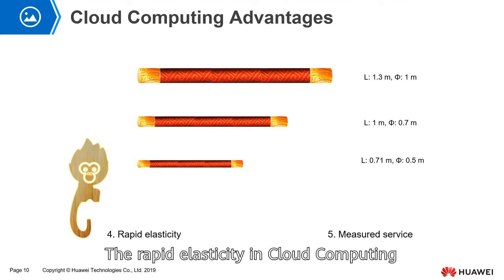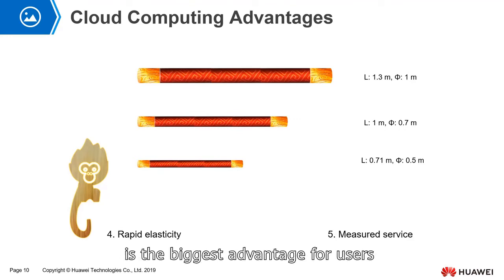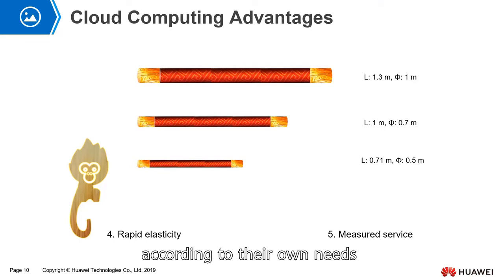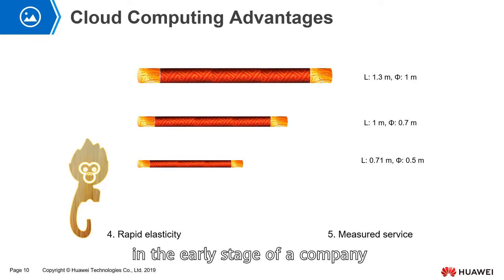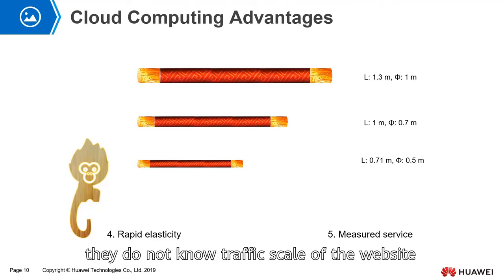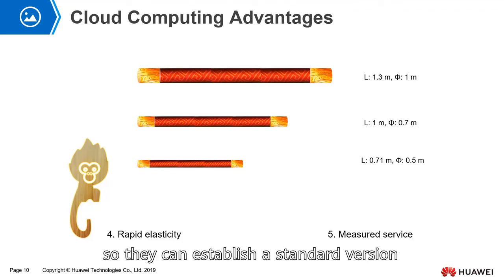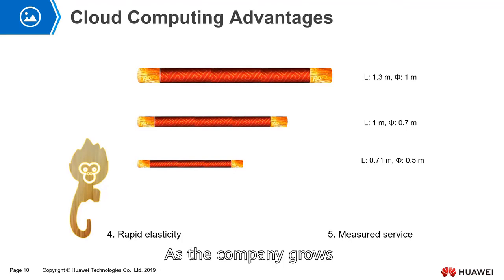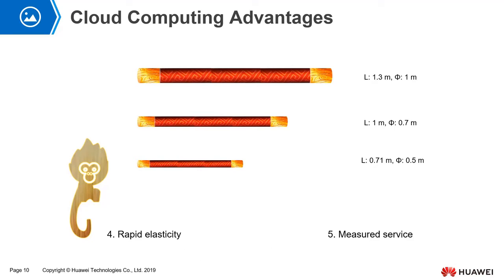Rapid elasticity in cloud computing is the biggest advantage for users. They can configure the specifications of cloud computing services according to their own needs. For example, in the early stage of a company, they may not know the traffic scale of the website, so they can establish a standard version to meet the traffic of a small number of people. As the company grows and the number of visitors increases, they can expand their site's traffic capacity to meet demand.